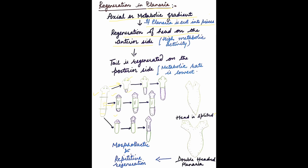In each fragment, the tail is always formed on the posterior side, and the head is always regenerated on the anterior side. This is because the metabolic rate is very high at the anterior end, so the head always develops there, while the tail is regenerated at the posterior side where the metabolic rate is lowest. Like hydra, if the head of planaria is split into two parts, a double-headed planaria is produced, showing morpholytic and repetitive regeneration.